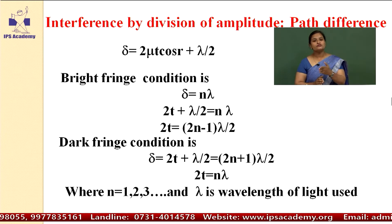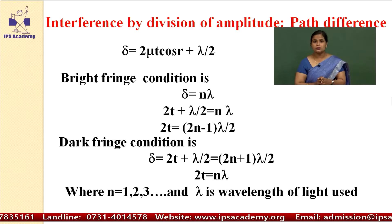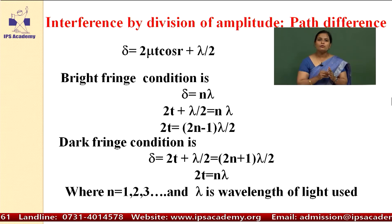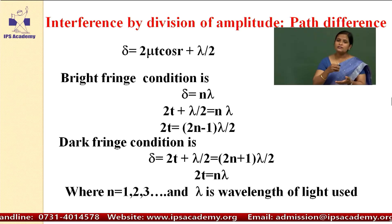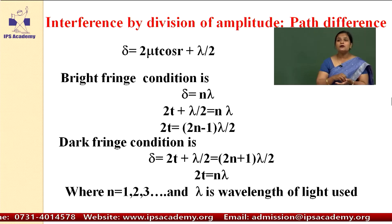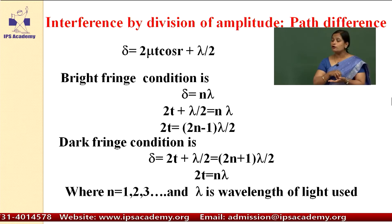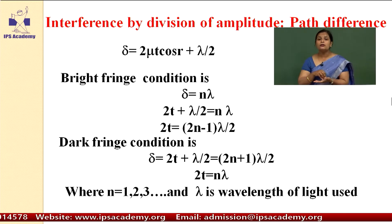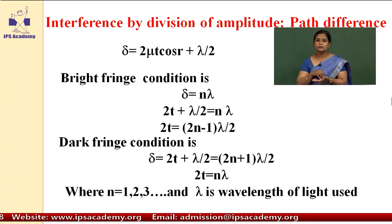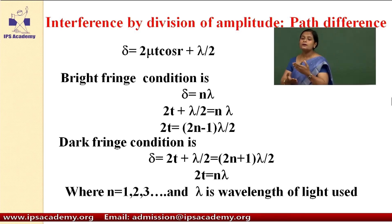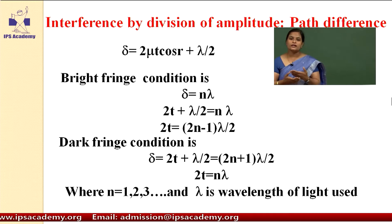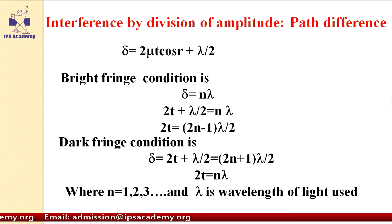Here n equals 1, 2, 3 and lambda is the wavelength of the light used. Remember the important point: in Newton's ring experiment, we always observe from the reflected portion or the reflected region. We are calculating the interference from the reflected beams of light. Hence, lambda by 2 is added in the path difference — that is the effective path difference.